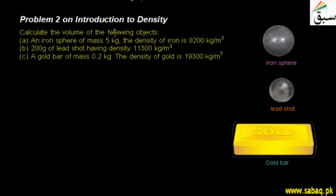Students, we have a simple problem with Introduction to Density. We have to find out the volume in these three statements. We have to find out the volume of three objects. The first object is an iron sphere with a mass of 5 kg and a density of 8200 kg per m³. Second, a lead shot with a mass of 200 grams and a density of 11300 kg per m³. Third, a gold bar with a mass of 0.2 kg and a density of 19300 kg per m³. Now we will solve this one by one.